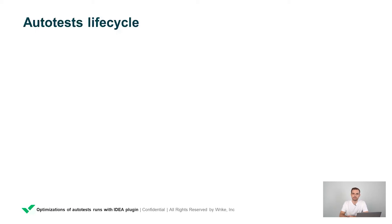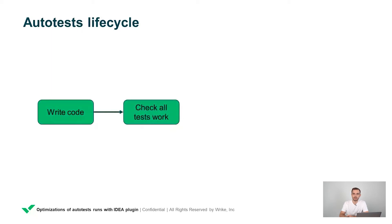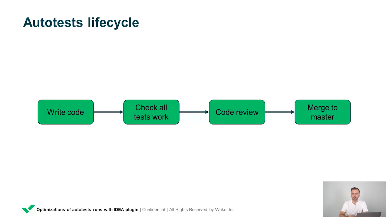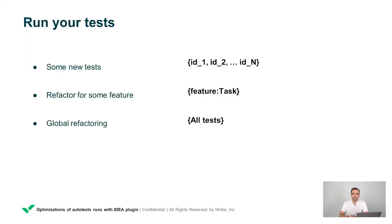To understand what problem we had, let's take a look at our auto-test development lifecycle. First of all, we need to write the code. After that we need to check that everything works correctly, then we have a code review stage, and after that we merge our code to master. In this pipeline we have one non-obvious step: how to understand that everything works correctly. The answer is simple — just run your tests. If you added only new tests, you can run those tests only. If you changed code for some feature, you can run tests related to that feature. If you made global refactoring, just run everything.